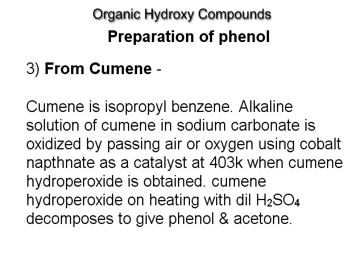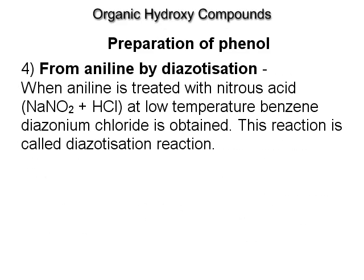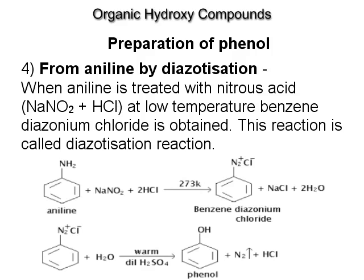From cumene (isopropyl benzene): the alkaline solution of cumene in sodium carbonate is oxidized by passing air or oxygen using cobalt naphthenate as a catalyst at 403 K, when cumene hydroperoxide is obtained. Cumene hydroperoxide on heating with dilute H2SO4 decomposes to give phenol and acetone. From aniline by diazotization: when aniline is treated with nitrous acid (NaNO2 + HCl) at low temperature, benzene diazonium chloride is formed. This reaction is called diazotization.